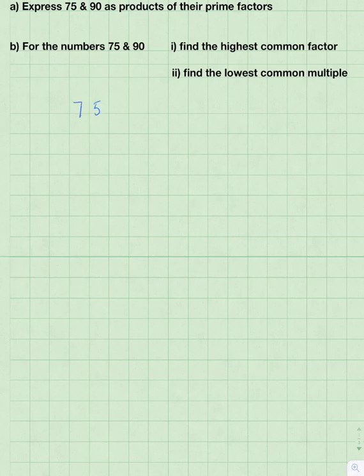75. 3 is a prime number and 3 times 25 equals 75, so that's the other factor. And then 25 factorizes into 5, which is a prime number, and 5, which is another prime number.